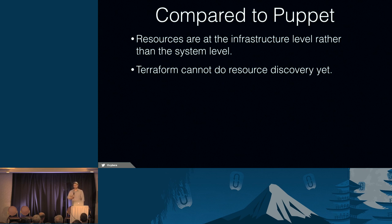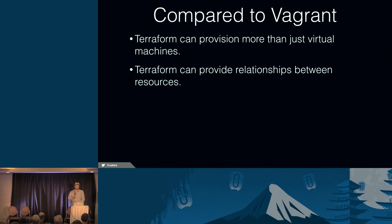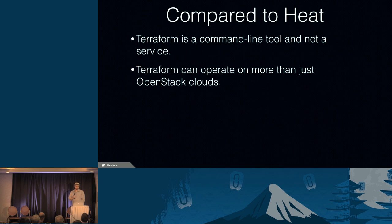Terraform can't do resource discovery yet. If you supply your cloud credentials, it's unable to inventory what you had existing. It can report on instances you use with Terraform, but no other discovery yet. Compared to Vagrant, Terraform can provision more than just virtual machines. Terraform can also relate resources together, not just virtual machines. Compared to Heat, Terraform is a command line tool rather than a service, and it can operate on more than just OpenStack clouds.